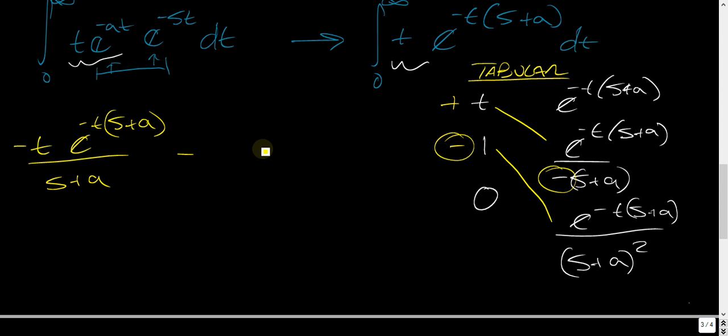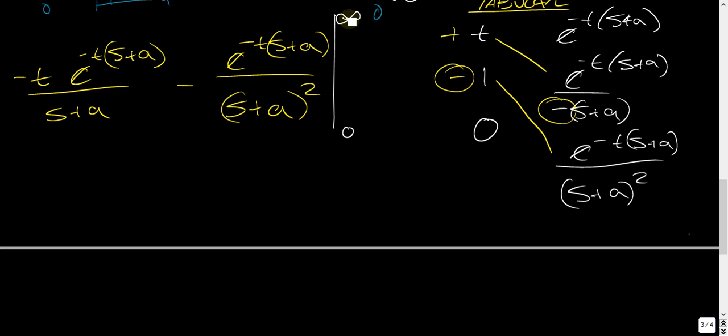Minus, and then one times this is just going to be minus t, s plus a, all over s plus a quantity squared. Now don't forget, we're integrating, so there are boundaries when you integrate, and we need to integrate from zero to infinity.